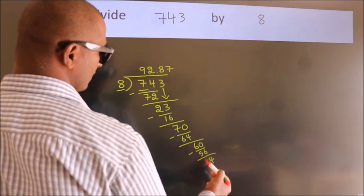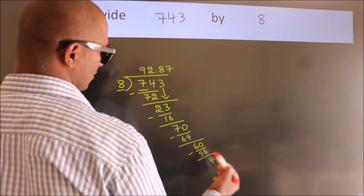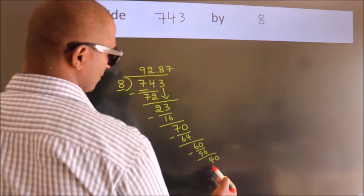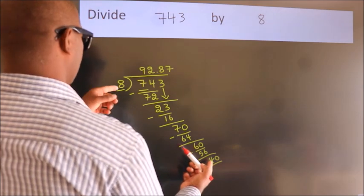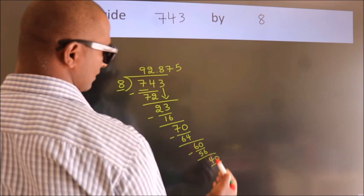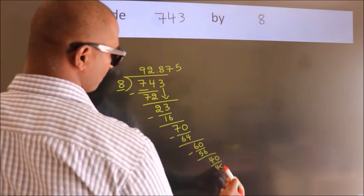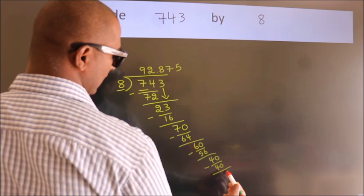After this, when do we get 4 in the 8 table? 8 fives, 40. Now we subtract. We get 0.